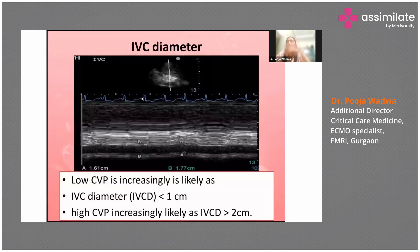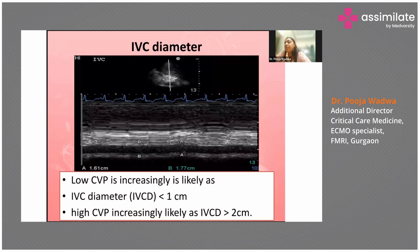This is the IVC diameter on M-mode. We have already measured it for a few respiratory cycles — the variability is 1.6 to 1.7 cm. Low CVP may be because of hypovolemia. When the IVC diameter is less than 1 centimeter, CVP is low and the patient requires fluids. If the IVC diameter is more than 2 centimeters, the patient is more than adequately filled and may require diuretics. Here the IVC is around 1.6 to 1.7 cm — the patient is adequately filled.